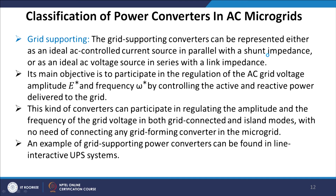The grid supporting converter can be represented either as an ideal AC controlled current source in parallel with a shunt impedance, or as an ideal AC voltage source in series with a link impedance. Its main objective is to participate in the regulation of AC grid voltage amplitude E and frequency omega by controlling the active and reactive power delivered to the grid. This kind of converter can participate in regulating amplitude and frequency of grid voltage in both grid-connected and islanded modes, with no need for connecting any grid forming converters. An example of a grid supporting power converter can be found in line-interactive UPS systems.